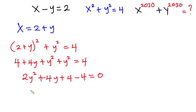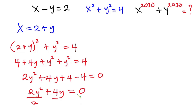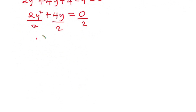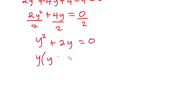Now from here, let's equate everything to 0. So we have 2y squared plus 4y is equal to 0. Let's simplify by dividing through by 2, giving us y squared plus 2y is equal to 0. So we can take y as a common factor, giving us y into y plus 2 is equal to 0.